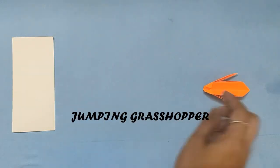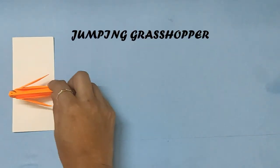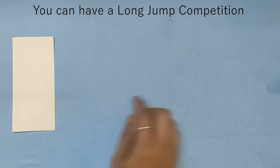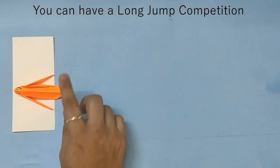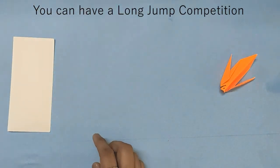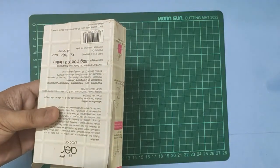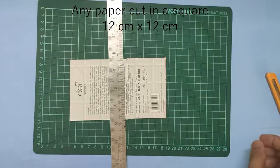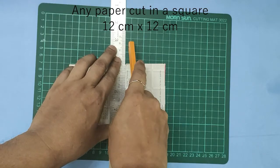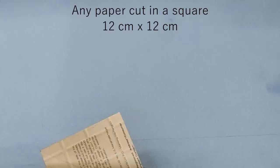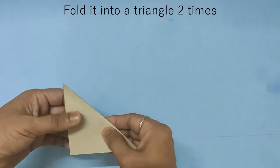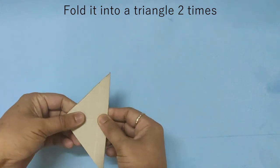Hello friends, let's make a jumping grasshopper. You can have a long jump competition. Just take any paper, cut it into a square of 12 centimeters by 12 centimeters, and fold it into two triangles.